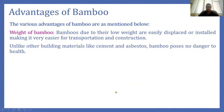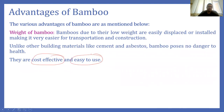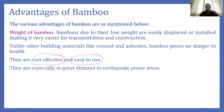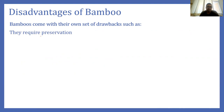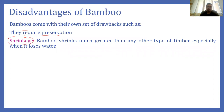Bamboo is highly cost effective and very easy to use, and therefore it is highly in demand in earthquake-prone areas. However, there are some disadvantages of bamboo. One disadvantage is it requires preservation for its proper protection. The second is shrinkage — bamboo shrinks much more than timber when it loses moisture, and when moisture content is low it shrinks very high.